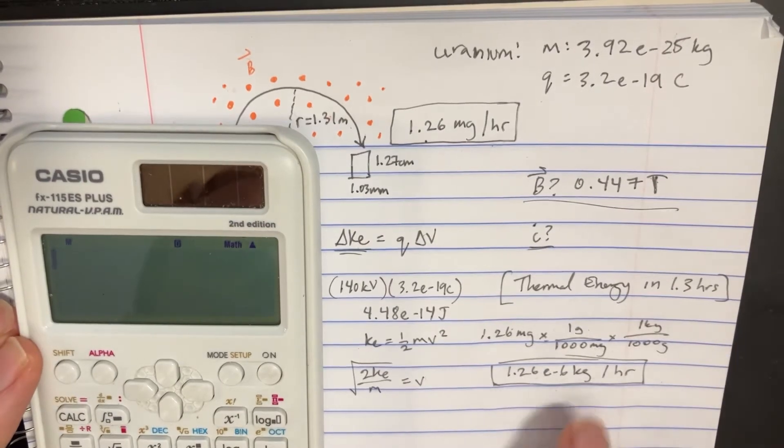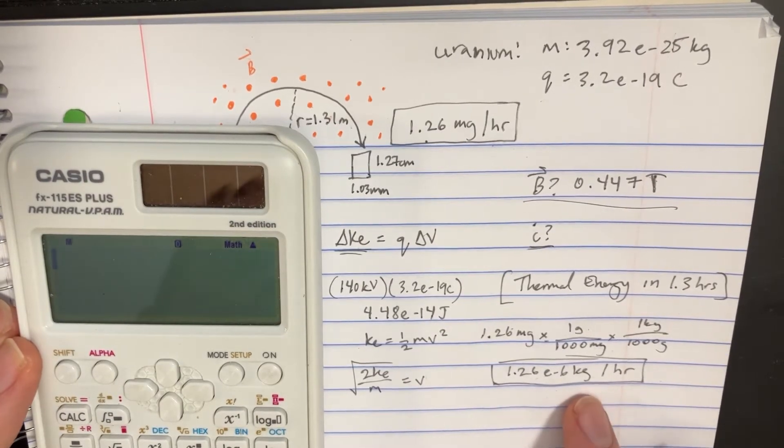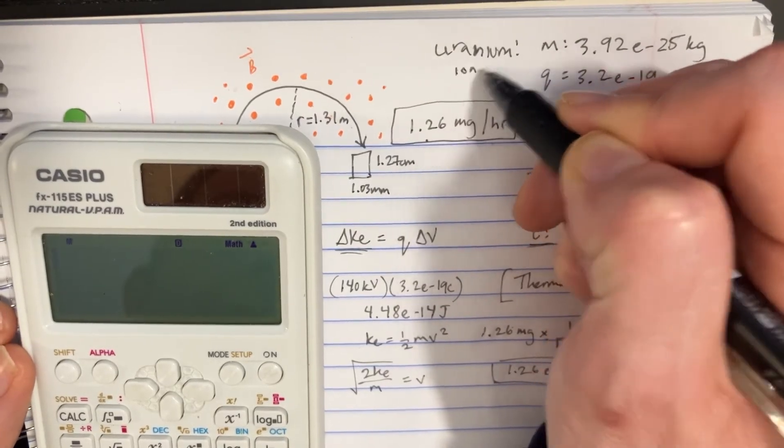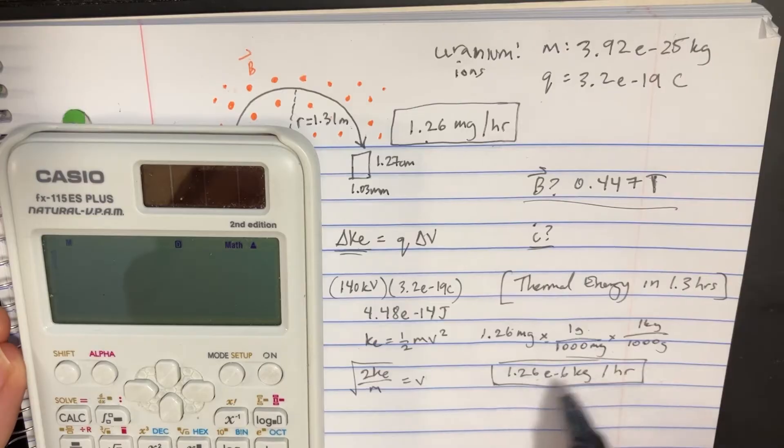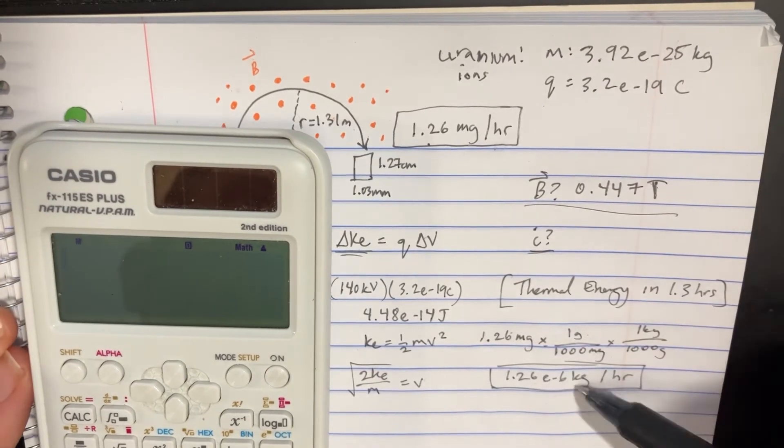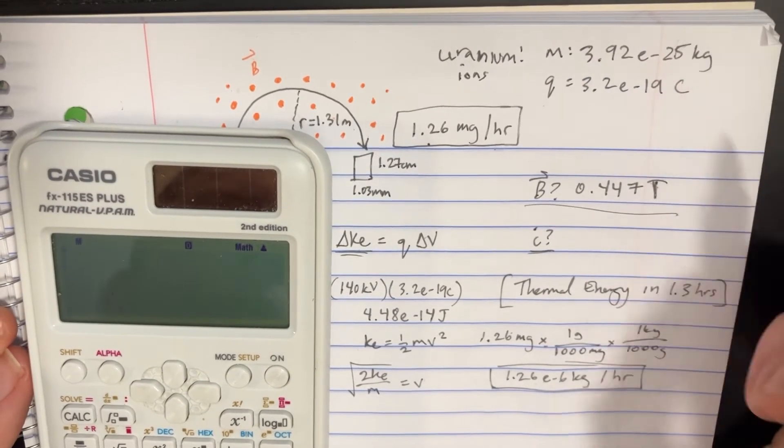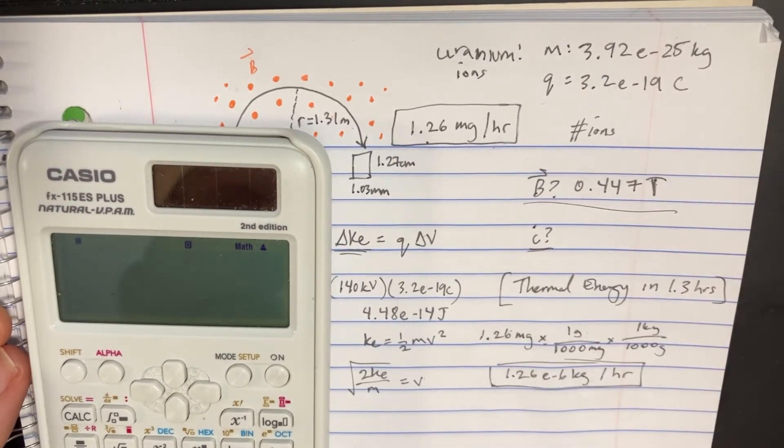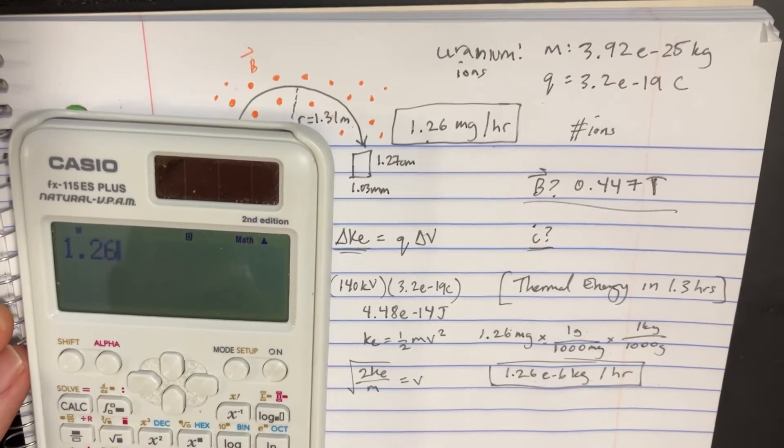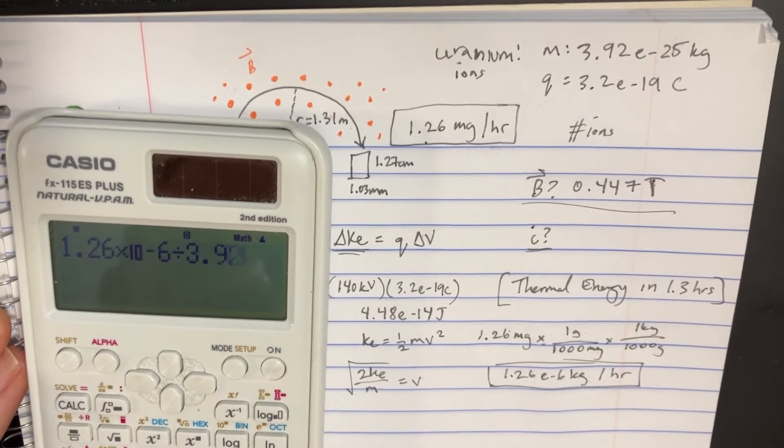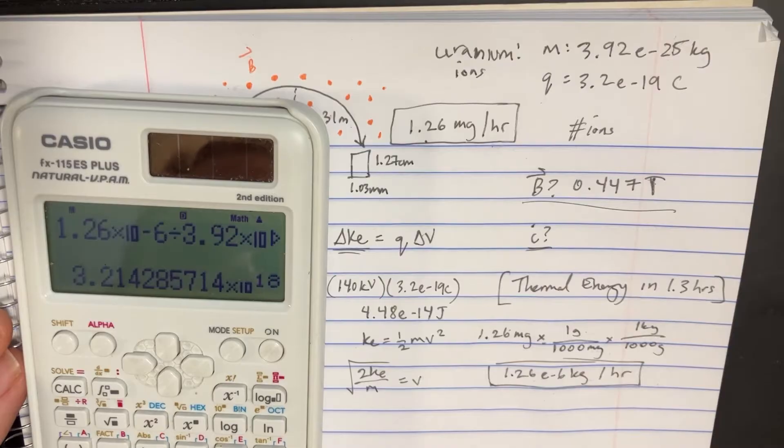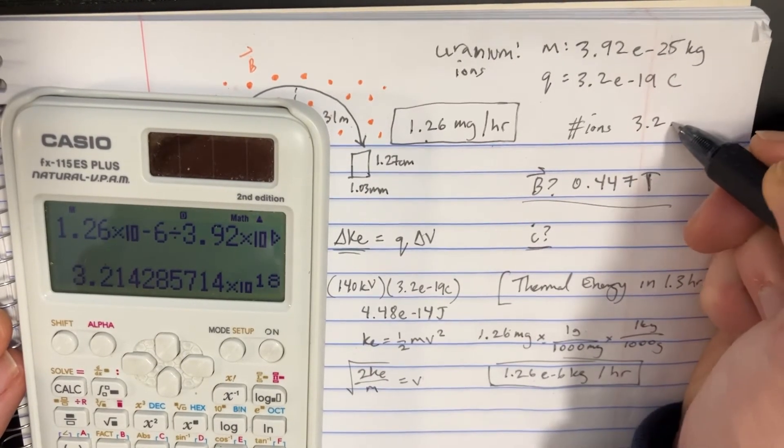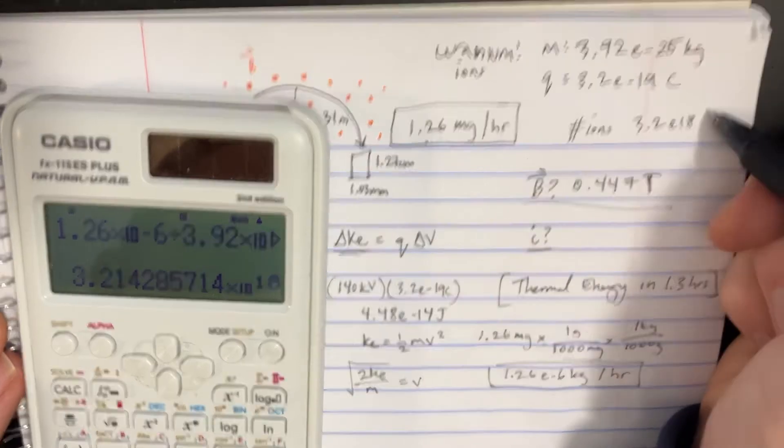Now if that's how many kilograms going out per hour let's figure out how many actual ions of uranium are coming through. We can divide that many kilograms by the mass and we'll figure out the number of ions. 1.26 to negative 6 divide that by 3.92 to negative 25 gives us 3.2 to 18 ions. That's per hour.